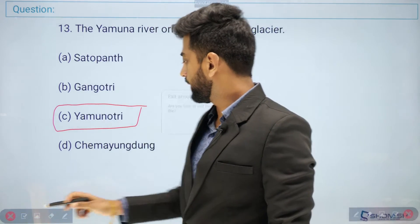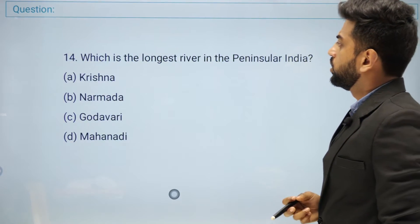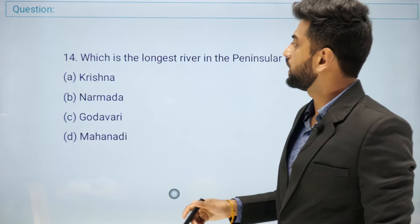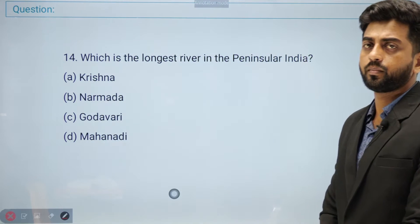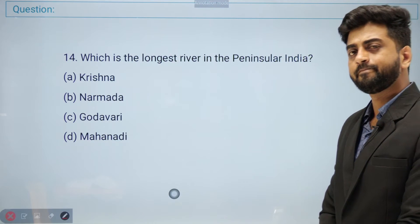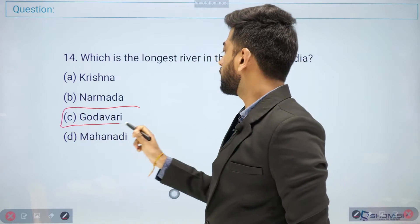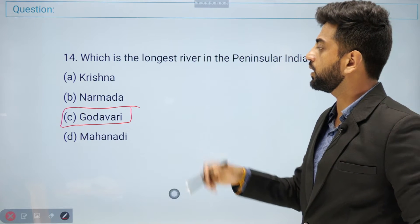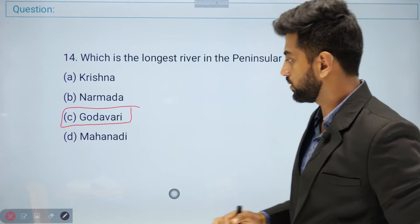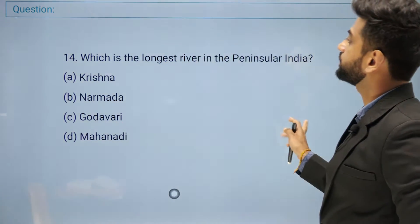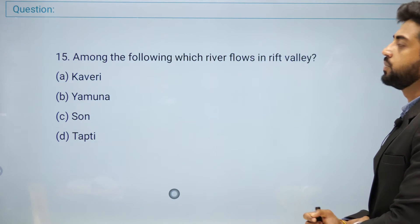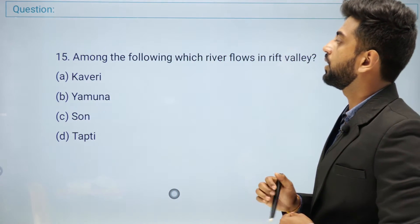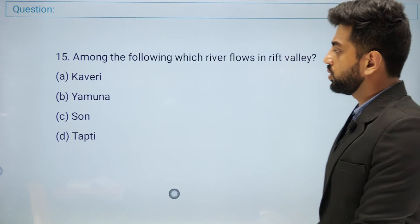Question number fourteen: which is the longest river in Peninsular India? Options: Krishna, Narmada, Godavari, or Mahanadi. The right answer is Godavari — it is the longest river in Peninsular India.